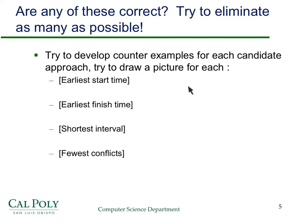Take a few minutes and try to draw a picture like the one a couple slides back, with time on the x-axis and jobs shown as intervals. Try to draw a set of jobs where earliest start time does not give you the maximum size compatible set. Do the same for earliest finish time, shortest interval, and fewest conflicts. Some of these may work, some may not. Don't spend too long on any one of them — just try to find a counterexample. Looking for counterexamples is an important part of developing a greedy algorithm: it can eliminate wasting time trying to prove something that's not true, and can give you insight into the problem.